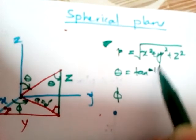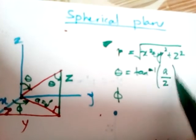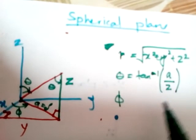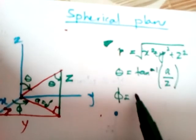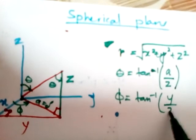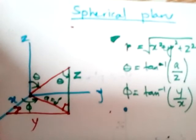Tan inverse, not tan square, tan inverse a phi z. Then I'm just going to leave it like that, I'm not going to simplify it. Phi as we know is tan inverse y by x. You might have already memorized this now, right? Okay, moving on.